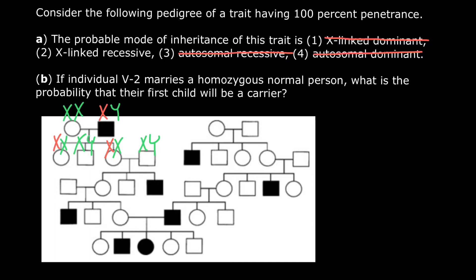What does it mean? That means this affected male got the defective X chromosome from the mother's side and a normal Y chromosome from the father's side. Boys in this family will always get the Y chromosome from the father. Some can be affected, some not, depending on whether they get a normal or defective X from the mother. This female got a normal X chromosome from the father's side, and because we see an affected male child in the following generation, we know she also got a defective X chromosome from her mother.